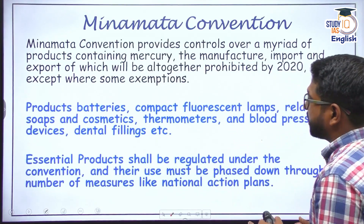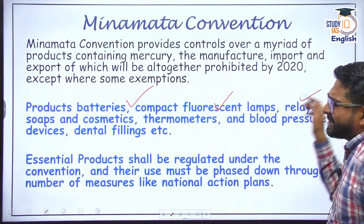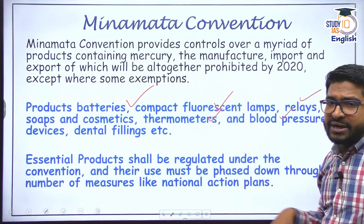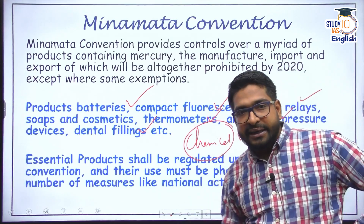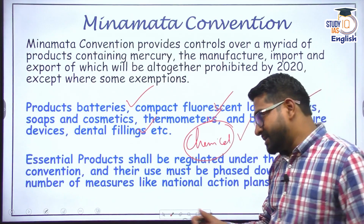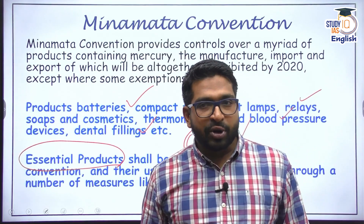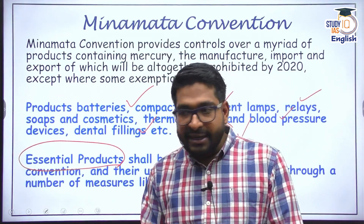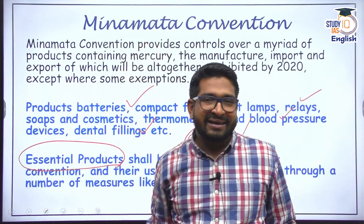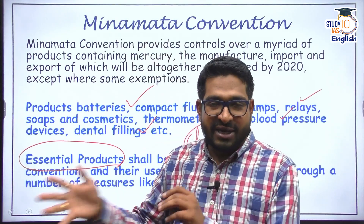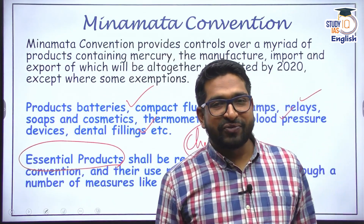Mercury is used in many areas: battery production, fluorescent lamp production, relays, electronics, thermometers, sphygmomanometers, dental fillings or dental amalgams, and other chemical production. The convention suggests that essential products and their use shall be regulated, while other products will be phased out slowly and steadily. For instance, we are now moving towards LEDs — light emitting diodes — and we will be phasing out CFLs completely in the next few years.